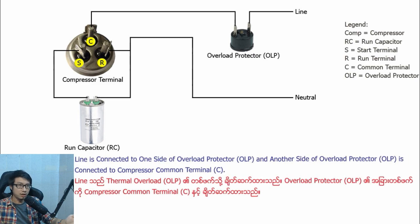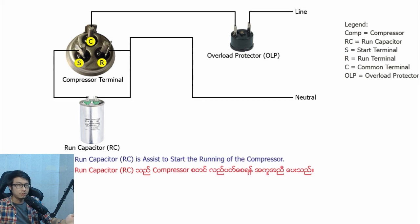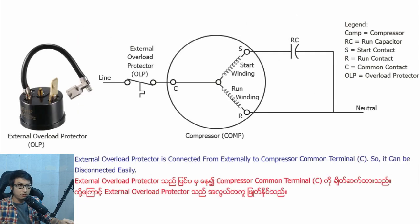Line is connected to one side of the overload protector, and the other side of the overload protector is connected to the compressor common terminal. Neutral is connected to the compressor run capacitor. The run capacitor assists in starting and running of the compressor.